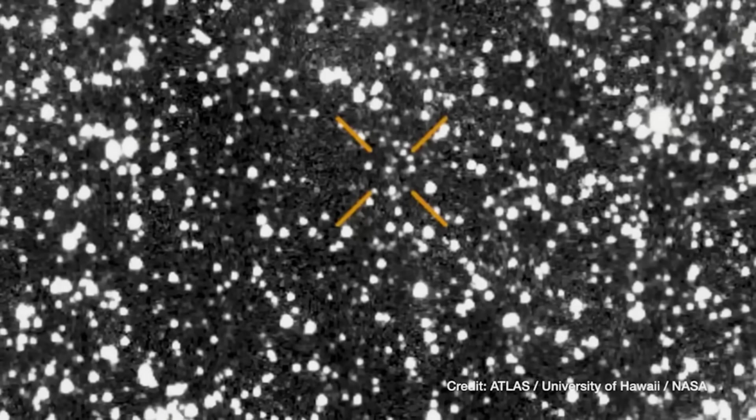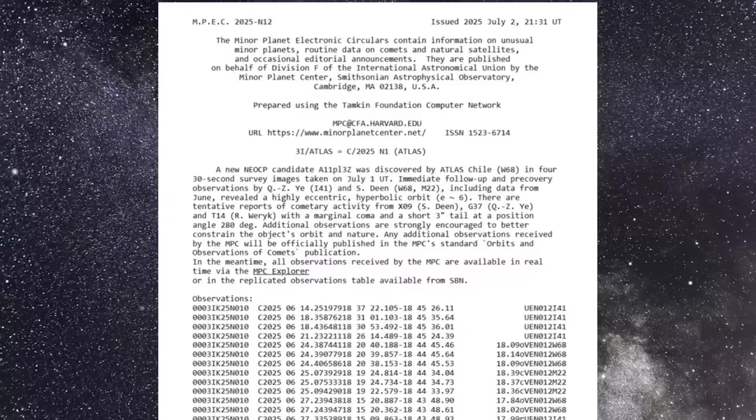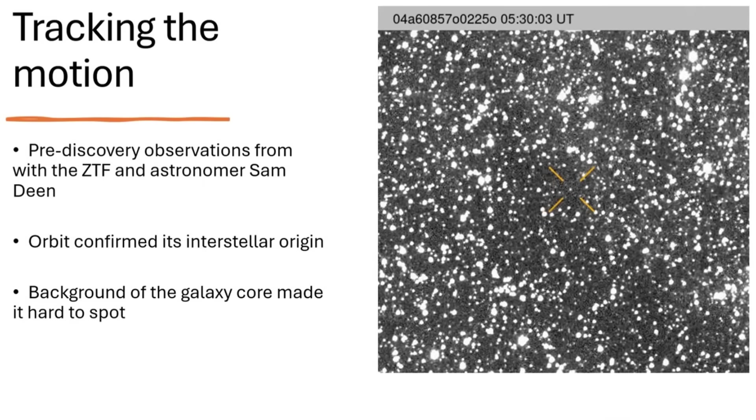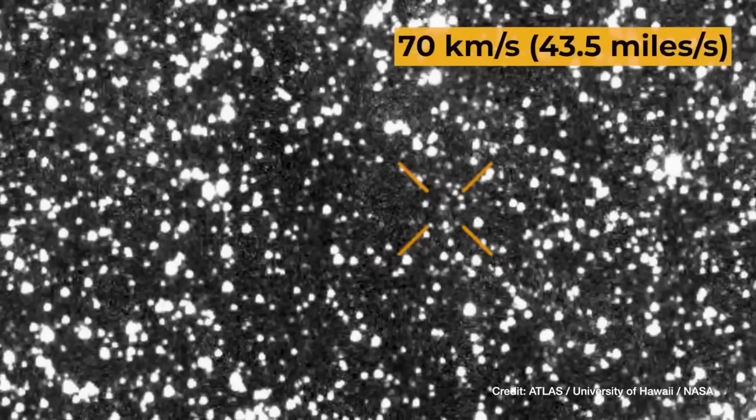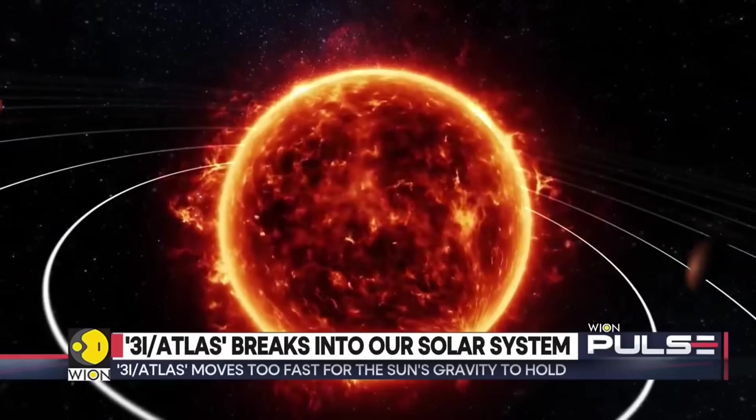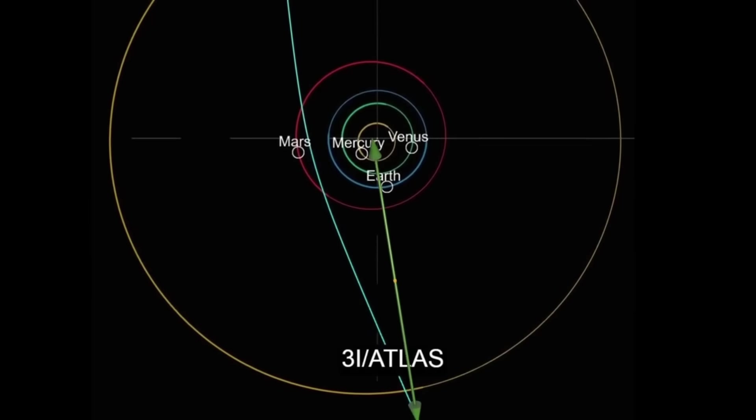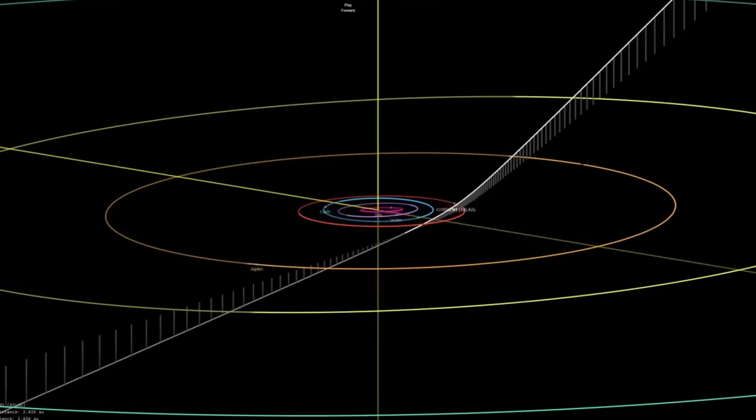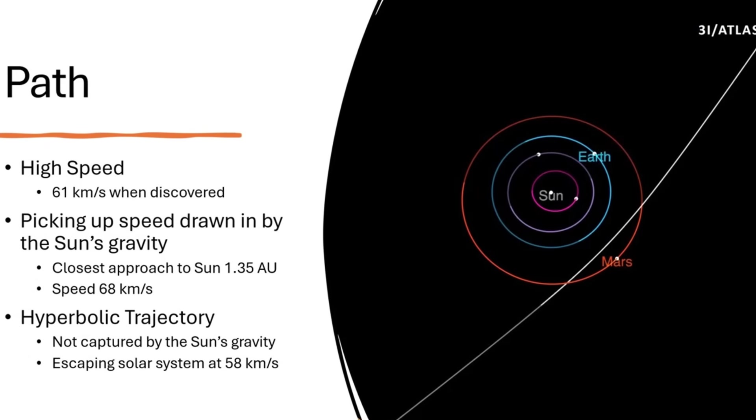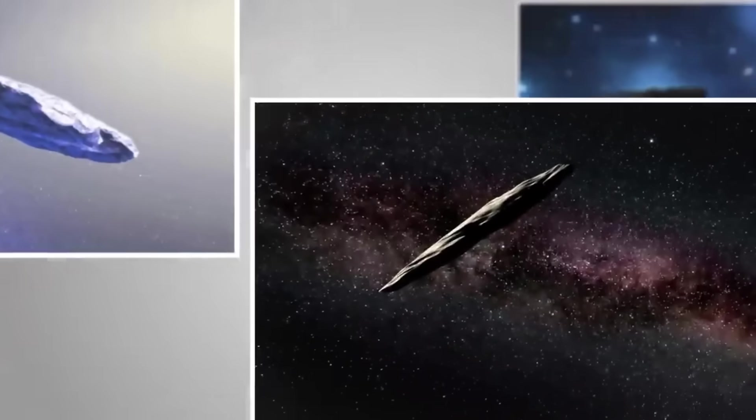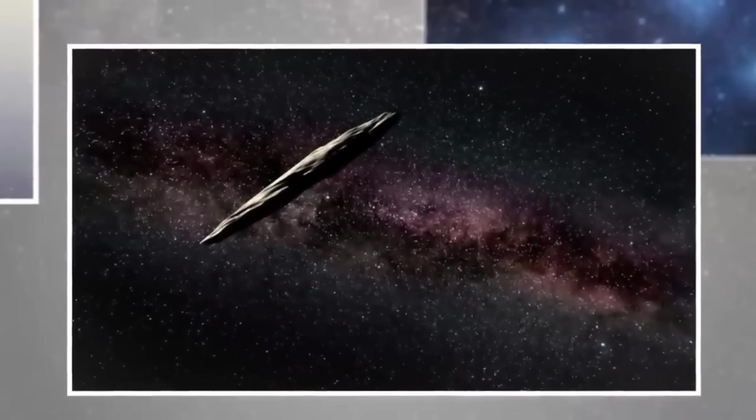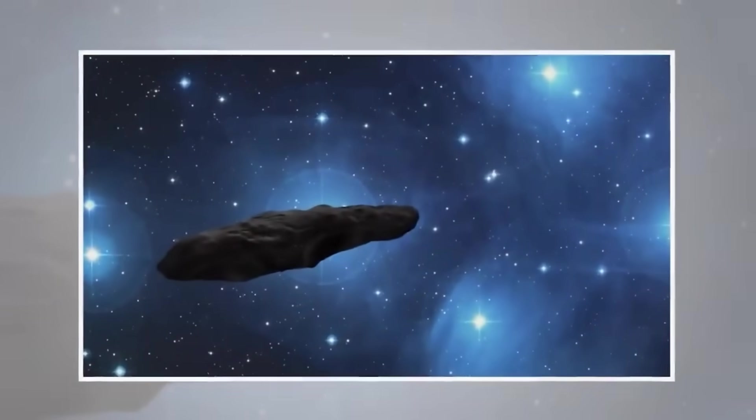But, unlike its mysterious predecessor, 3i/ATLAS isn't hiding its nature. Where Oumuamua baffled us with its lack of visible tail, strange acceleration, and enigmatic properties, this new visitor is putting on a spectacular show. 3i/ATLAS is massive, up to 20 kilometers wide, and behaving exactly as astronomers would expect from a typical comet. It's developing a glowing coma and tail as it approaches our sun, releasing gas and dust in ways we can easily detect and measure. It's as if the cosmos answered our questions about Oumuamua with another messenger, one that's playing by all the conventional rules of physics.